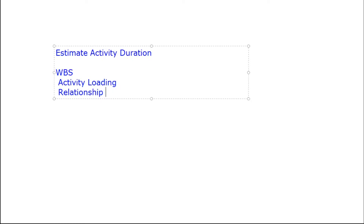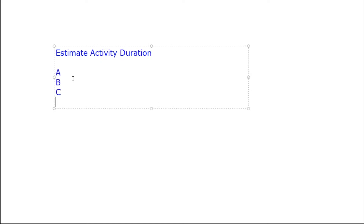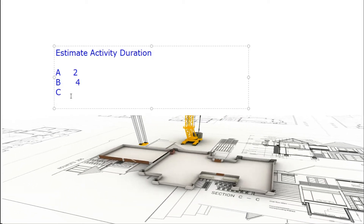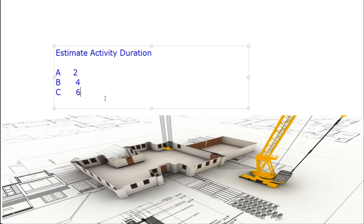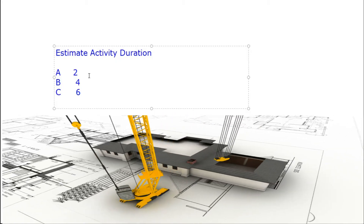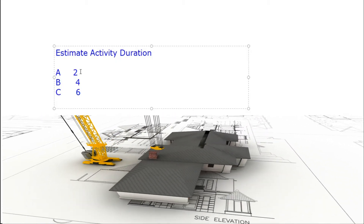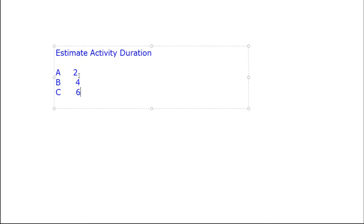Now the third thing - the very important thing. You will also be curious about which activity takes how many days. Let's say I have some activities here: Activity A will complete in two days, Activity B will complete in four days, and Activity C will complete in six days. But how do we know that? Is it a rule? It is a principle that we will study today - we have to find out the activity duration.